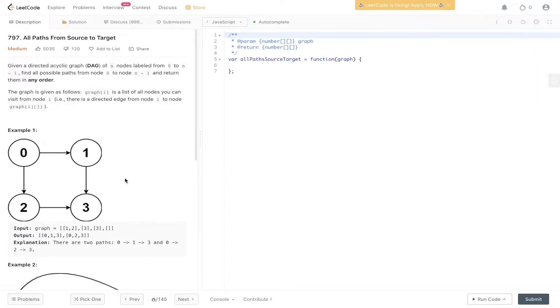Welcome back to Algo.js. Today's question is LeetCode 797, all paths from source to target. Given a directed acyclic graph of n nodes labeled from 0 to n-1, find all possible paths from 0 to node n-1 and return them in any order.